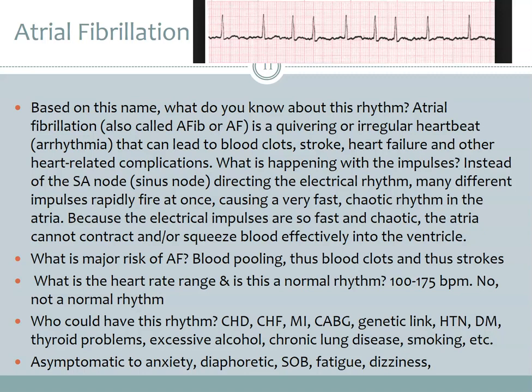Even though the electrical conductivity is coming from the SA node — the natural pacemaker — it's doing it ineffectively, with too many impulses rapidly firing at once causing a chaotic rhythm the heart cannot keep up with. Blood pools and sits, forming clots. When the ventricles do squeeze, they can send a clot through. The heart rate in AFib is between 100 and 175 beats per minute. This is not a normal heart rhythm.